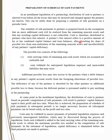The schedule of safe payments to partners is prepared based on the assumption that no more additional cash will be realized from the remaining non-cash assets, and that any resulting capital deficiency is not collectible. The assumption here is that any partner with a capital deficiency is automatically insolvent. Cash is therefore distributed to partners who have free interest. A partner's free interest refers to a positive amount of his or her combined capital balances and loan balances after absorbing his share of possible loss.